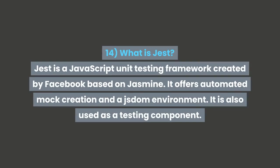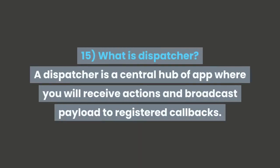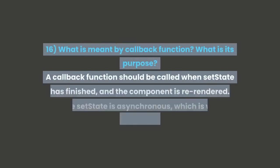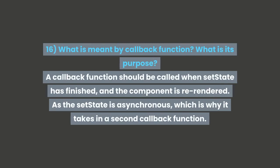Jest offers automated mock creation and a jsdom environment. It is also used as a testing component. Question 15: What is a dispatcher? A dispatcher is a central hub of the app where you receive actions and broadcast payload to registered callbacks. Question 16: What is meant by a callback function and what is its purpose? A callback function should be called when setState has finished and the component is re-rendered.